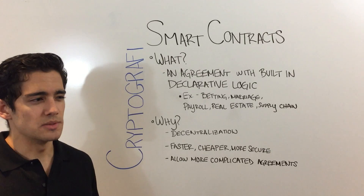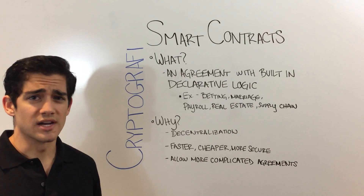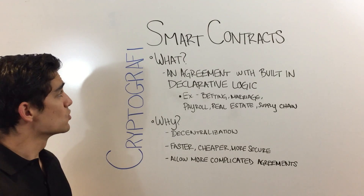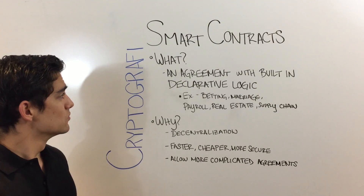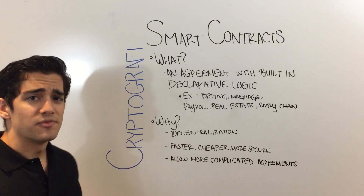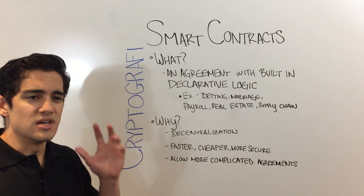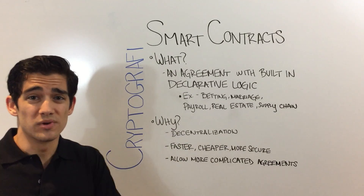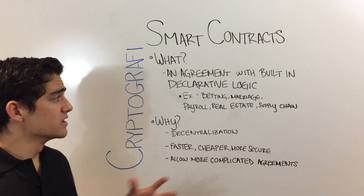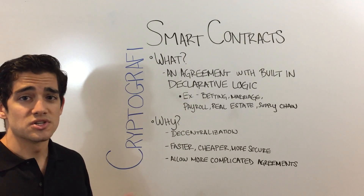You may have heard of smart contracts when people say that Ethereum and Tezos have their own native support for smart contracts where Bitcoin doesn't. I'm here to demystify that a bit. So what is a smart contract? Well, it's an agreement with built-in declarative logic. To simplify that, think of it as a computer program mixed with a real-life agreement — like a loan payment on your car, your mortgage, or even a betting contract, but computerized.